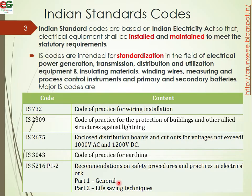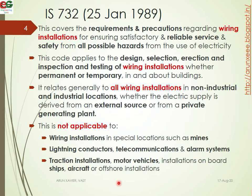Now we are going to look at these five IS codes in detail. IS 732 is the first one, published on 25 January 1989. This code covers the requirements and precautions regarding wiring installations for ensuring satisfactory, reliable service and safety from all possible hazards, including temporary wiring installations.